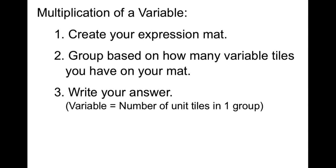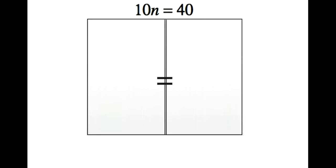The next thing we're going to do is multiplication of a variable. When I see an integer or a coefficient being multiplied to a variable, we're going to first create your expression mat, group based on how many variable tiles you have on your mat, and then write our answer — which is the variable and the number of unit tiles in one of the groups we created. So copy down 10N equals 40. We're going to create our expression mat with 10 X tiles representing N, and 40 unit tiles on the right hand side.